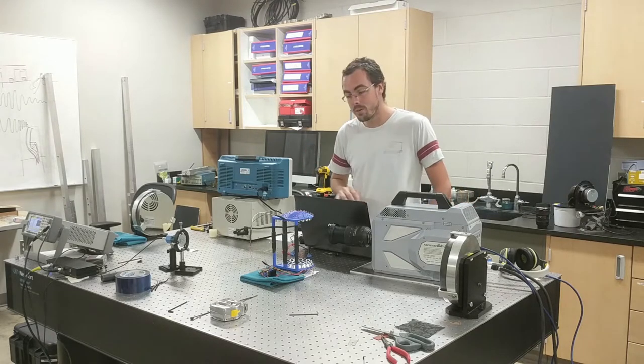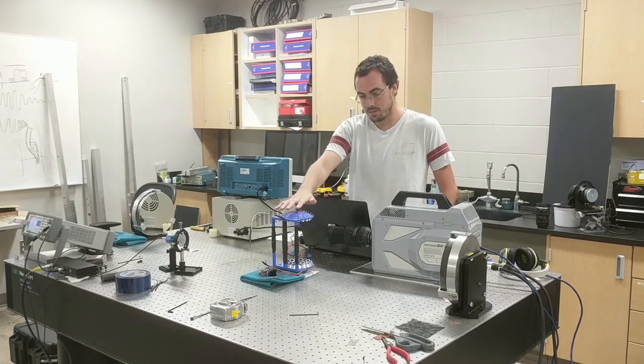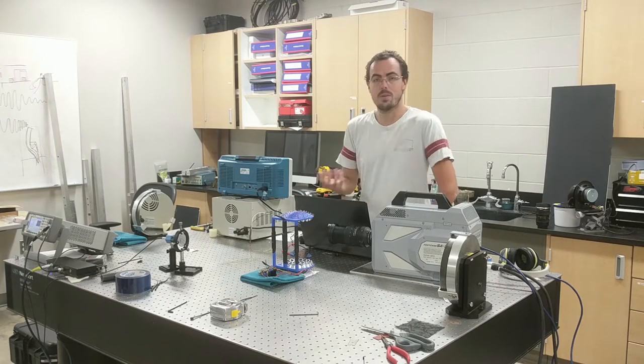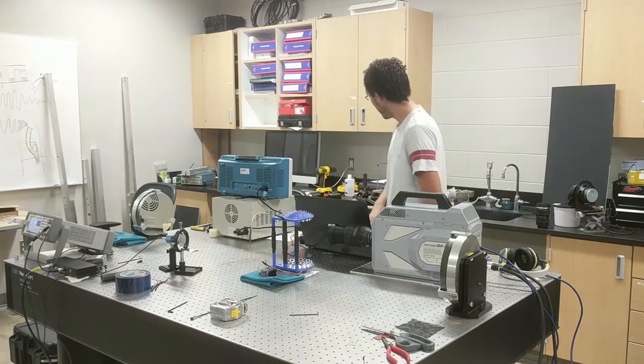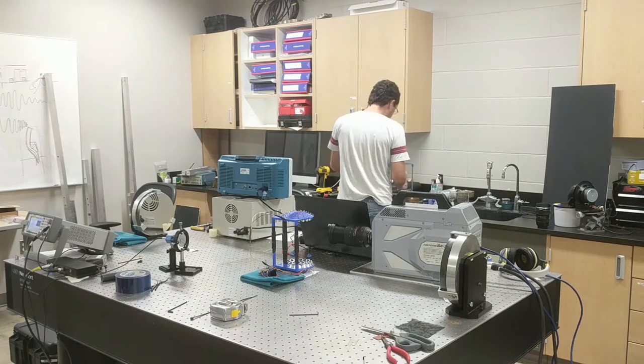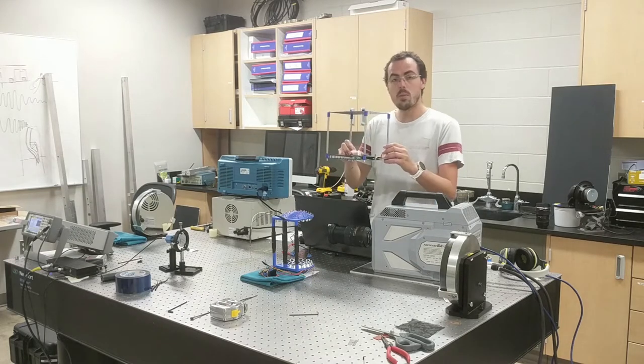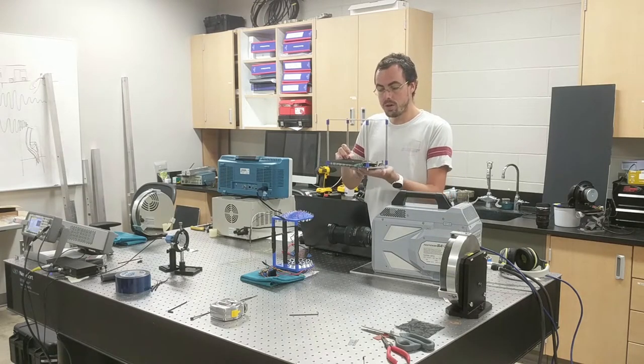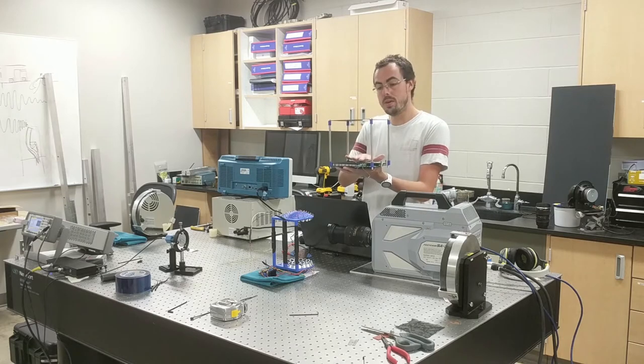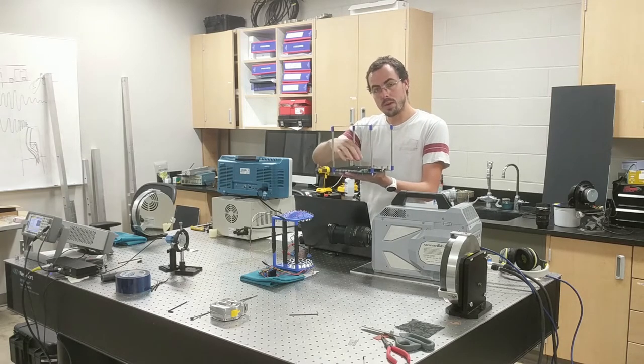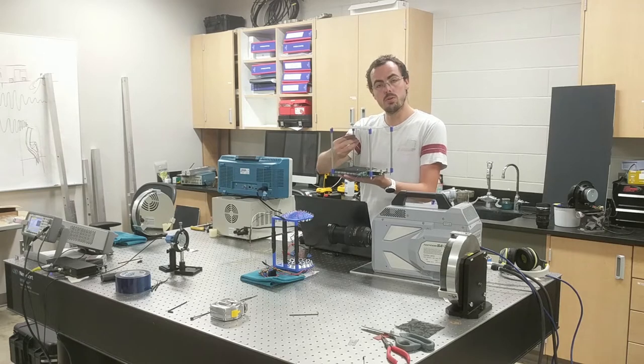So here we're going to be playing with an ultrasonic levitation device and we're going to be looking at the acoustic field of said ultrasonic device. We actually have two types of ultrasonic devices. One is a phased array emitter, which is shown here. It's just a flat PCB with 64 actuators that can be independently controlled to produce an acoustic field.